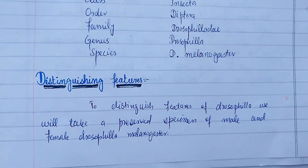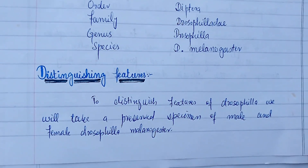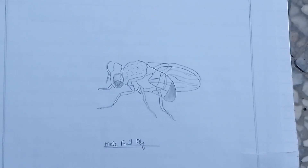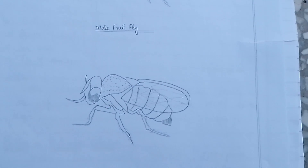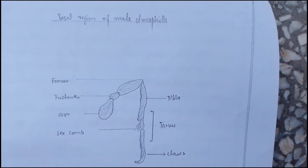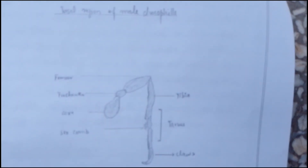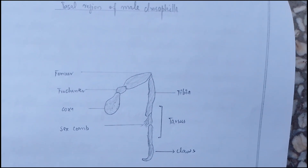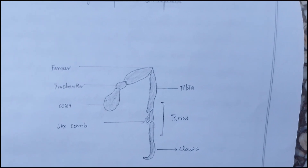To distinguish male from female Drosophila, we will take a preserved specimen of male and female Drosophila melanogaster. On the next page we will draw a diagram of the tarsal region of male Drosophila, which is the main distinguishing feature of male and female, as it consists of sex combs in the male fruit fly, while sex combs are absent in the female fruit fly.